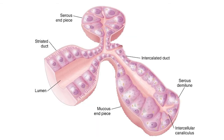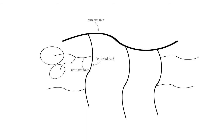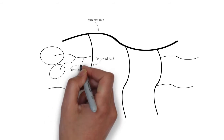The saliva produced inside these end pieces is known as the primary saliva. This saliva passes through a series of ducts. There are basically three main types of ducts that the saliva passes through before entering the oral cavity.